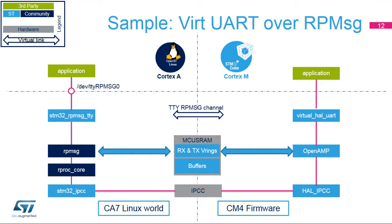From now on, the Cortex-A7 core is able to send messages through the virtual UART channel. Note that it is possible to create several instances of the virtual UART. In terms of RPMSG protocol, this consists of creating a new endpoint per instance. The result is the creation on the Cortex-A7 side of a dev-TTY-RPMSG-X interface.